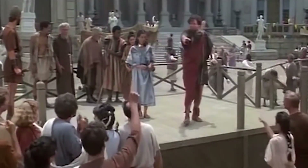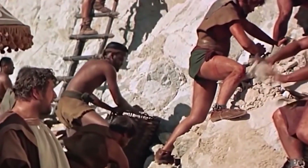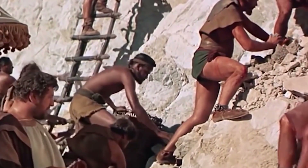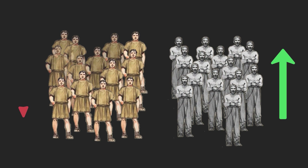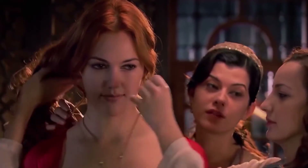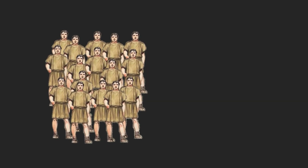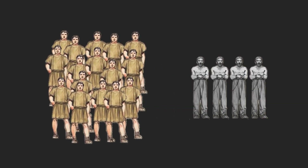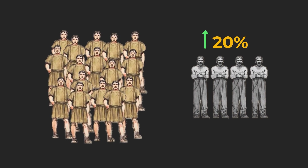Slaves were a vital source of labor and wealth for Rome, but also contributed to the decline of the Roman economy and society as the slave population grew and the non-slave population decreased, leading to a decline in civic engagement and an increase in wealth disparity. At its peak, it is estimated that slaves made up to 20% of the entire Roman population and even higher in areas such as Italy.